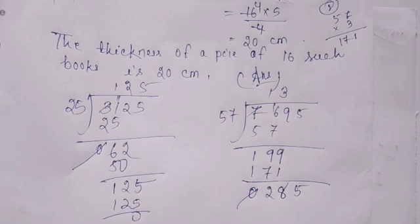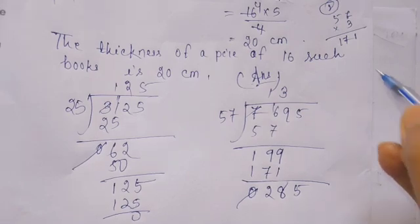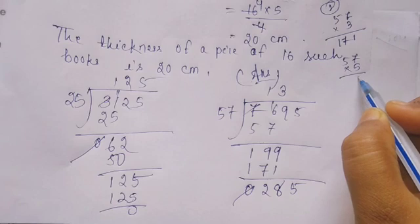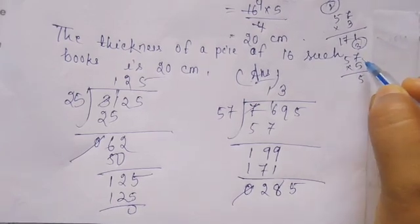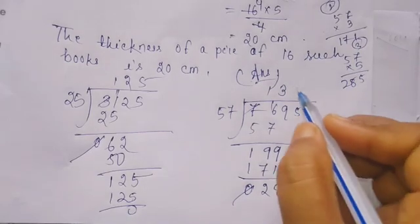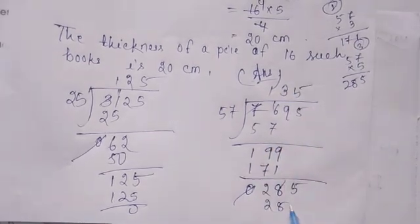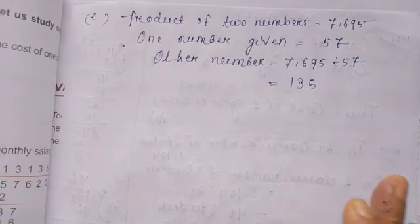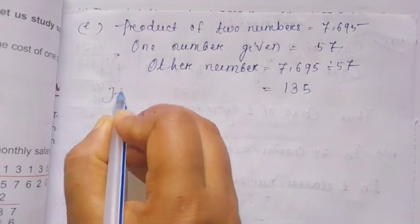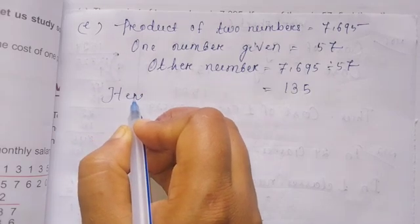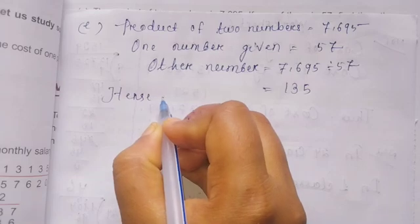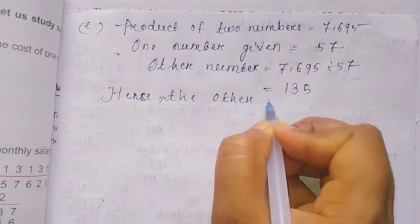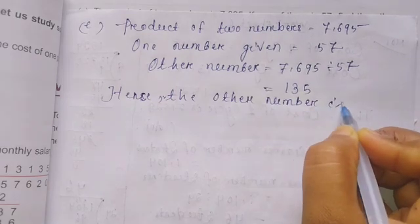57 times 5: 5 times 7 is 35, carry 3; 5 times 5 is 25 plus 3 equals 28. 57 times 5 is 285. 285 minus 285 equals 0. The answer is 135. Hence the other number is 135.